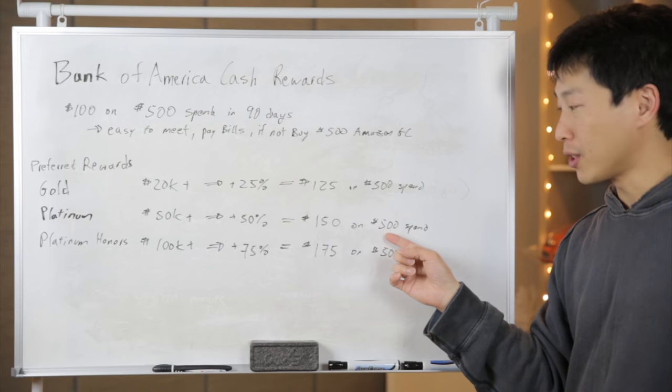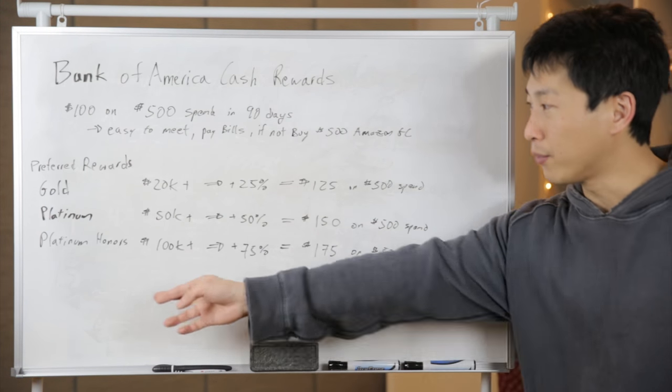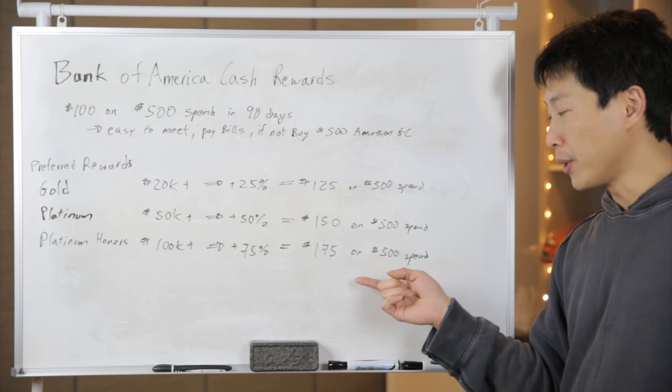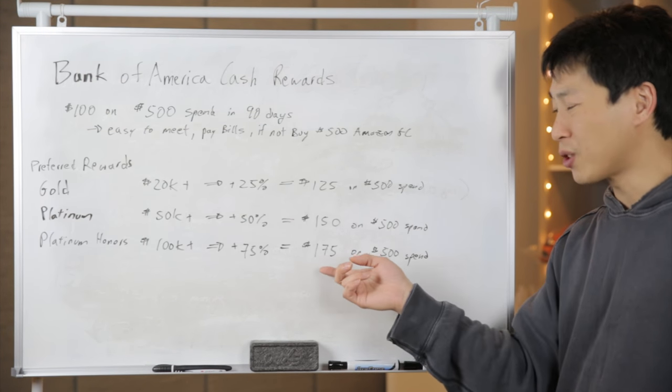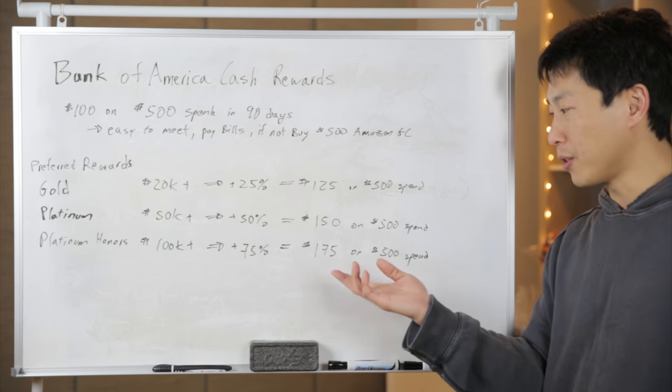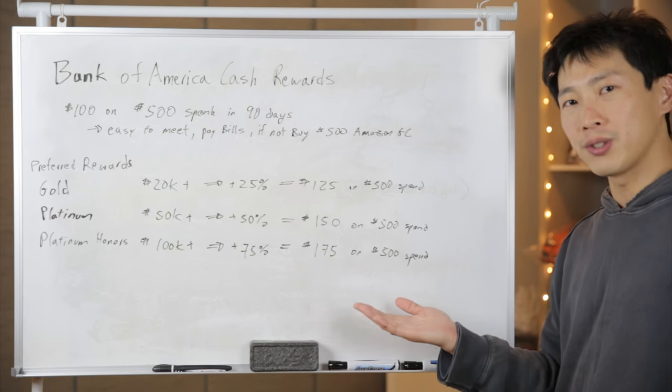$150 on that $500 spend or $175 on that $500 spend if you are part of the Platinum Honors. Now $175 is pretty good on a $500 spend. This is 35% cash back here. Even that Barclays cash forward card I was talking about, you get $200, which is about 40%. So it's pretty close to that.